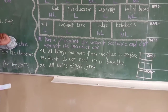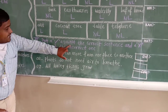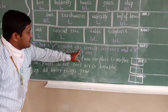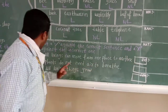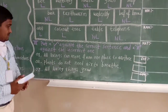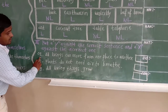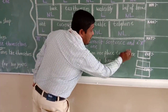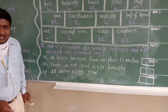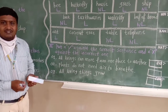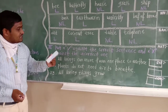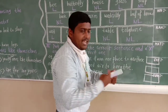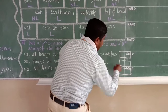Now, third question: put a tick against the correct sentence and a cross against the incorrect one. First: all living things can move from one place to another. Is this correct or not? True or false? This is true, because all living things can move from one place to another. So I put here a tick.